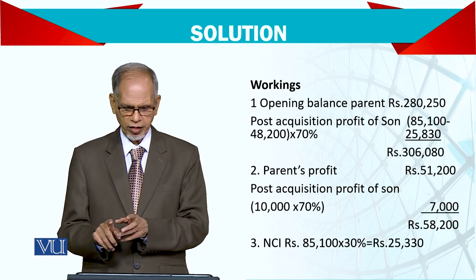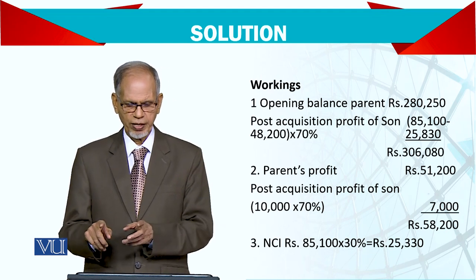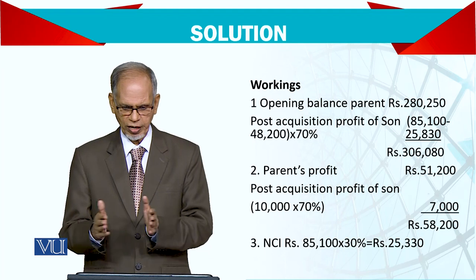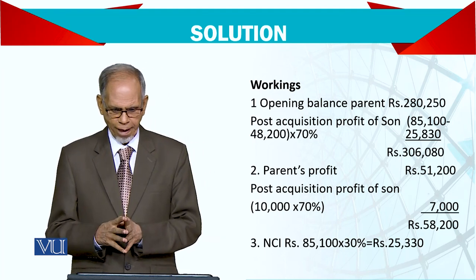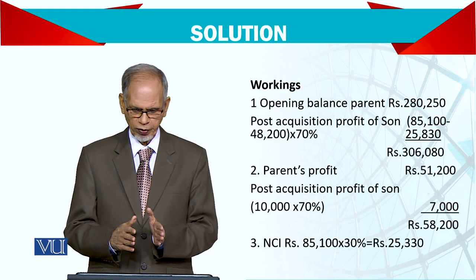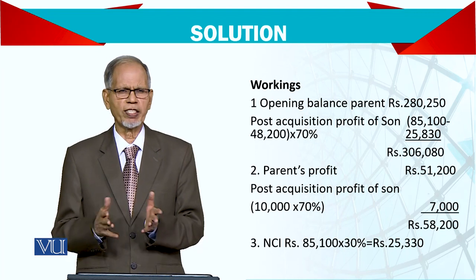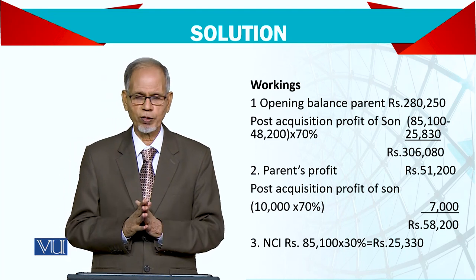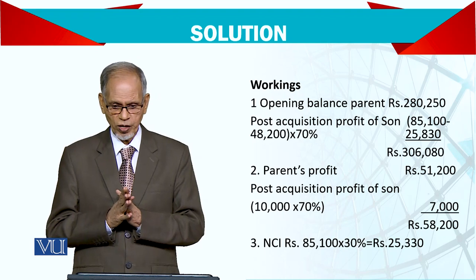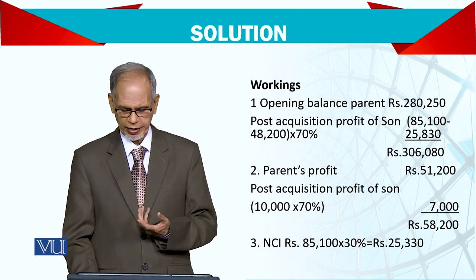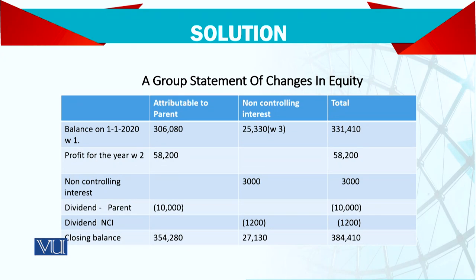Post-acquisition balance of son — also 70%. The pre-acquisition figure is 85. So 70% parent's profit post-acquisition — that is seven. And the NCI's 30% of 85 is calculated separately. No other adjustment needed. But to repeat: the dividend — we will show it separately, just like the previous question where we showed 30% of 4,000 separately in the accounts.